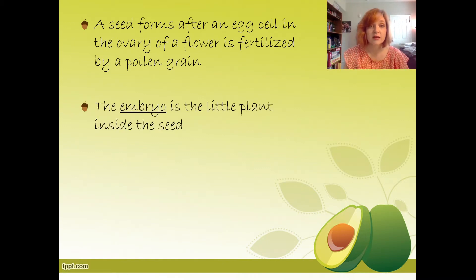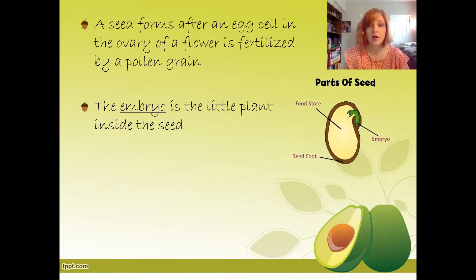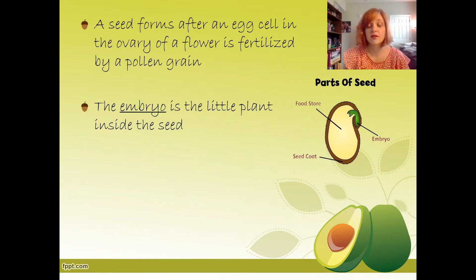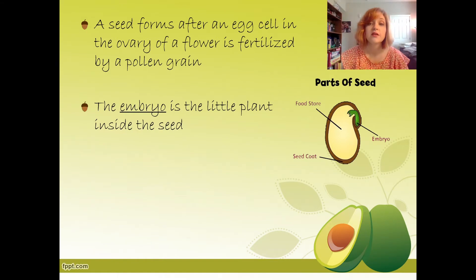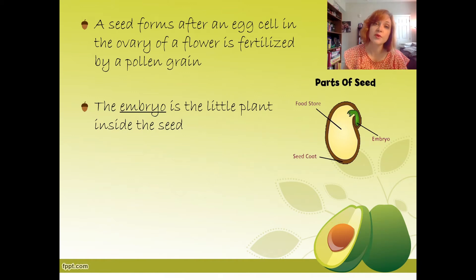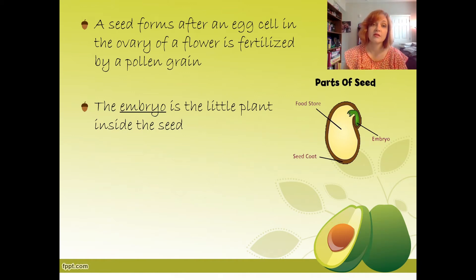The embryo in a seed is the little plant. In this image showing parts of the seed, you can see that the little embryo is the baby plant. The rest of the seed — most of it — is just food storage. The hard outside is what we call the seed coat, because it protects the seed and the baby plant. Just like you put on a coat to protect you from rain or cold in the winter, the seed coat protects the little plant inside.